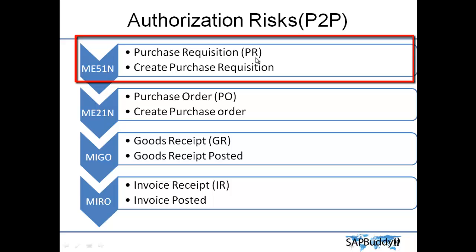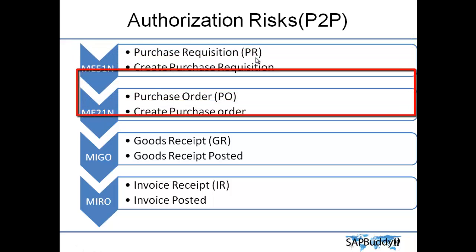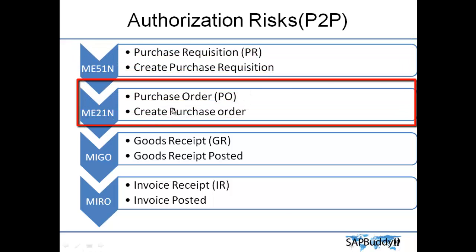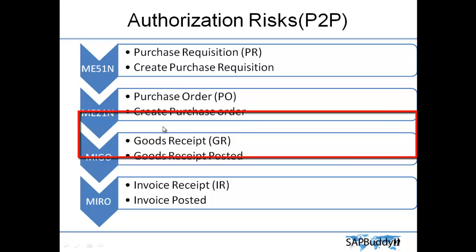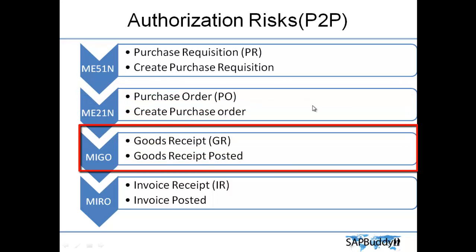Let's say you wanted to purchase some goods. Then the purchase requisition is sent to the purchasing manager, who will go to ME21N and convert the purchase request into a purchase order, or create their own purchase order based on company policy and customization. Then this purchase order is given to the vendor.